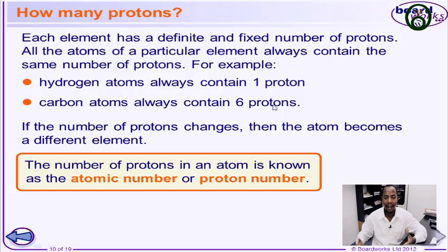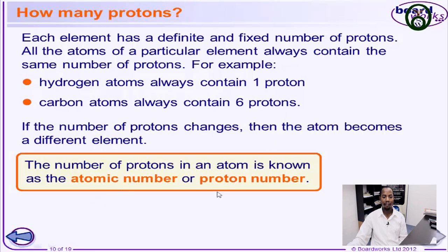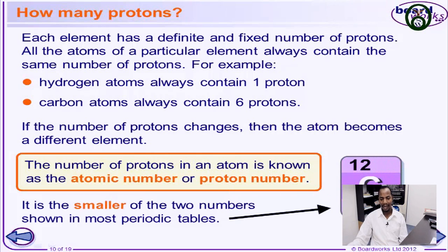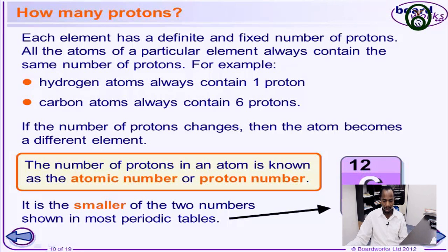If we ask you to define the atomic number, you simply tell us it is the number of protons found in the nucleus of the atom. For example, if you take a look at this carbon atom, the number of protons is 6. The mass number, which we'll talk about in a while, is 12. So the number of protons is 6, and therefore the atomic number of carbon is 6.